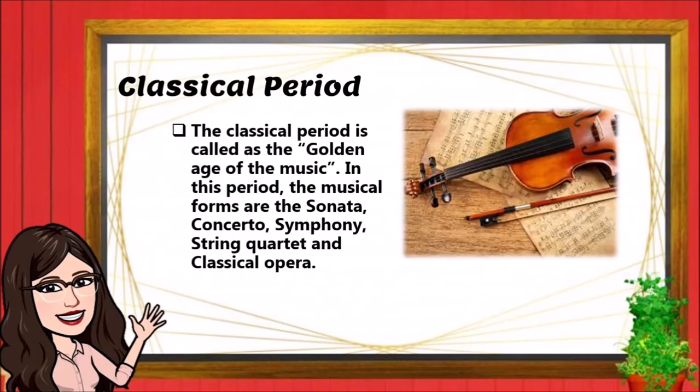The classical period is called the golden age of music. In this period, the musical forms are the sonata, concerto, symphony, string quartet, and classical opera.